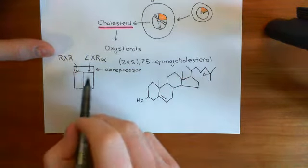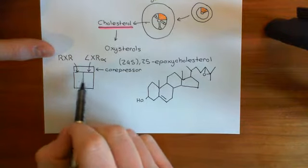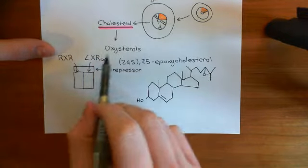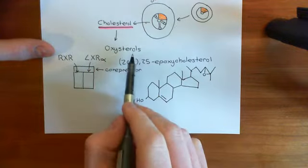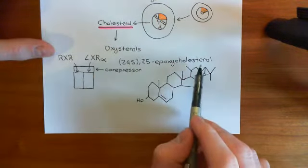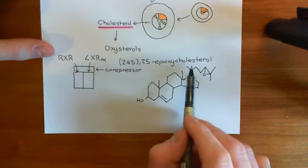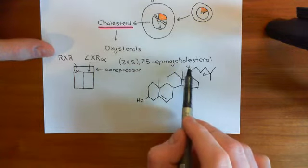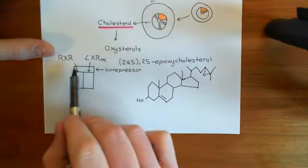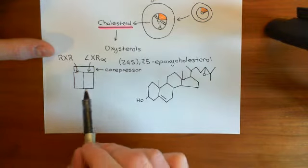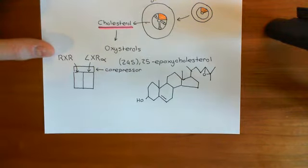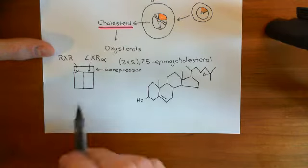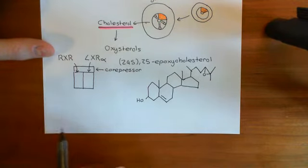If there's no ligand bound to either receptor, that indicates cholesterol cannot be very high within the cell, because otherwise oxysterols such as 24S,25-epoxycholesterol would be present. Therefore we do not want to be activating the genes involved in excreting cholesterol from the cell, which is why they repress the transcription of those genes.